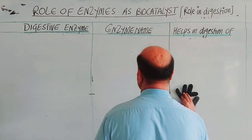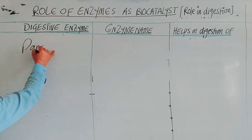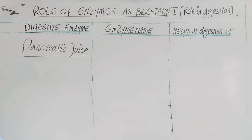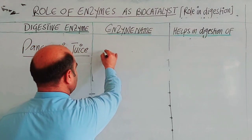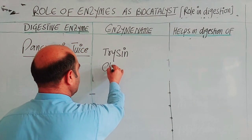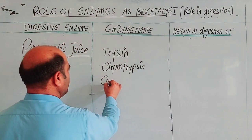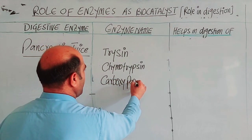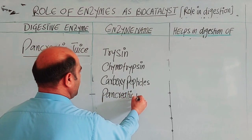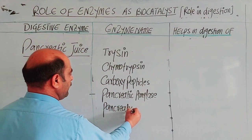Now, pancreatic juice is found in the pancreas and contains several enzymes — five enzymes in total. These are: trypsin, chymotrypsin, pancreatic amylase, and pancreatic lipase.